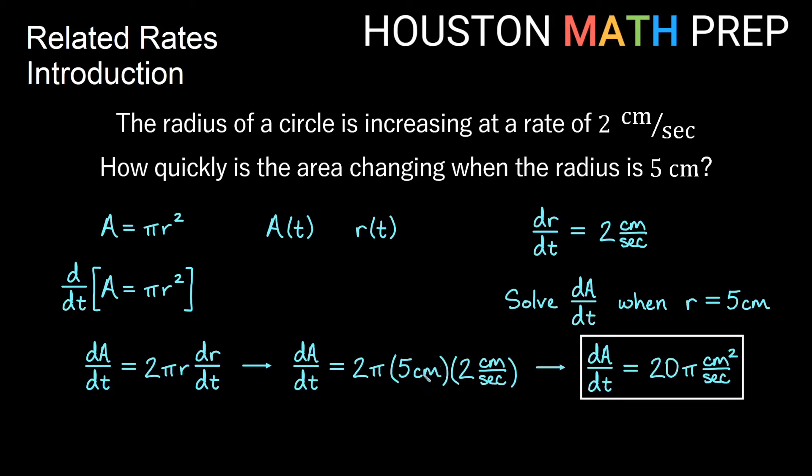You'll notice we have centimeters and another centimeter here, so we actually get centimeters squared per second. And centimeters squared per second makes sense because we're doing change in area, and area should be in terms of centimeters squared.